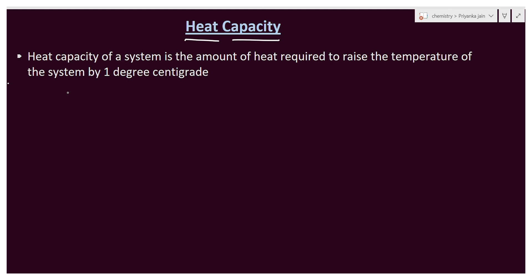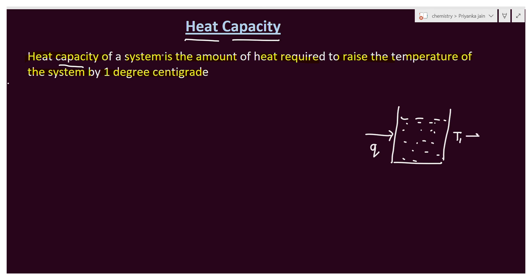First of all, understand what is heat capacity. Heat capacity of a system is the amount of heat required to raise the temperature of the system by 1 degree centigrade. Suppose we have a system — a beaker filled with water — and we are providing it heat Q. As a result, its temperature is increasing from T1 to T2.